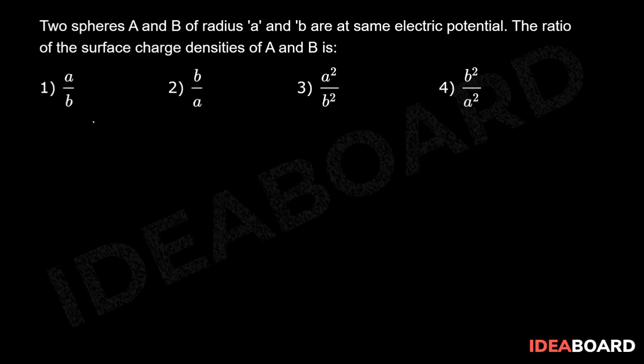Generally electric potential due to point charge V is equal to 1 by 4 pi epsilon 0 into q by r.